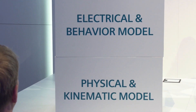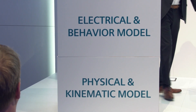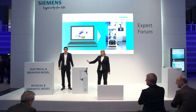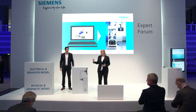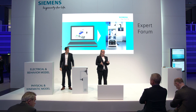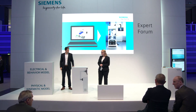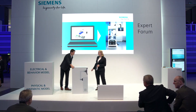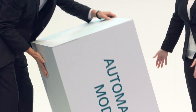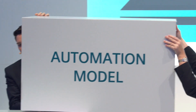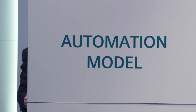And last but not least, we also want to control our digital twin. In the best situation, we would do this with the original controller program. Therefore, we need a so-called automation model.